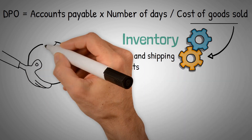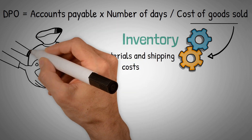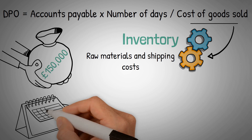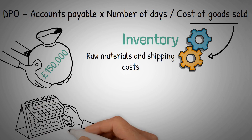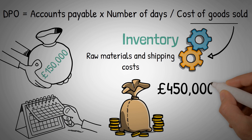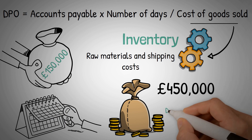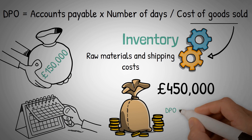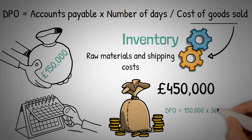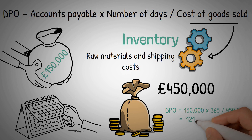As an example, a company has an accounts payable valued at £150,000. This is the average over a year period. The cost of goods sold came to £450,000 over that same period of time. Thus, DPO equals 150,000 multiplied by 365, divided by 450,000, equals 121.6 days.